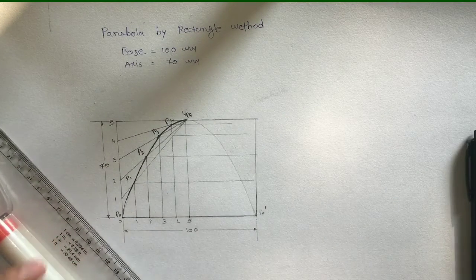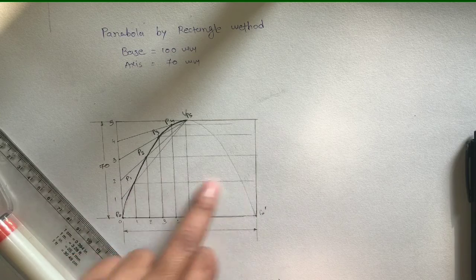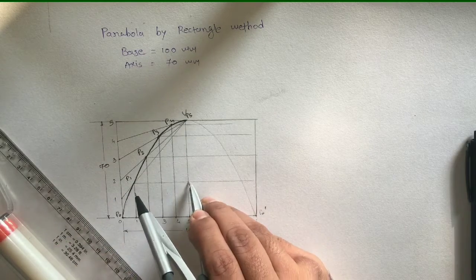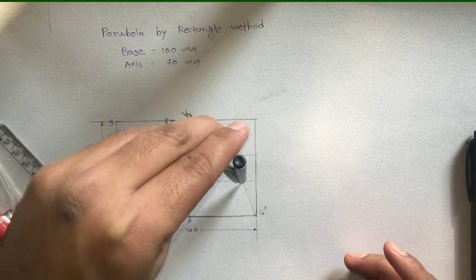Now take the compass, put the pointer of the compass on the intersection of the line and the axis, take the distance of point P1 and mark it on the other side.